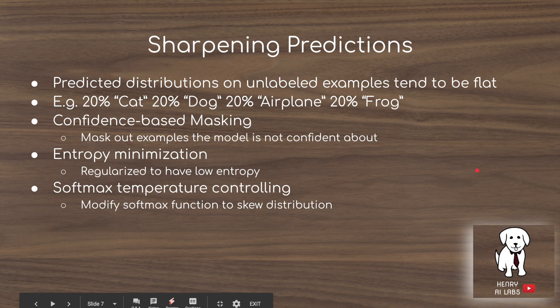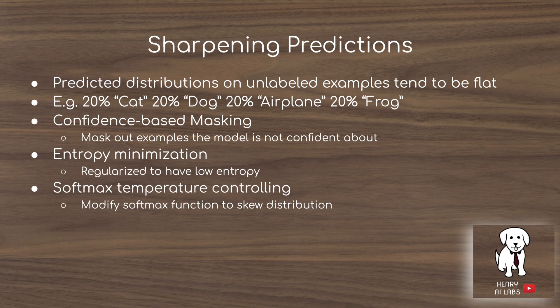They also talk about sharpening their predictions. When taking unlabeled data samples and predicting a class label, a lot of the time the model has no idea what it's looking at, so it basically outputs 20% cat, 20% dog, 20% airplane, 20% frog. This is really problematic for the idea of aligning the prediction before and after augmentation.